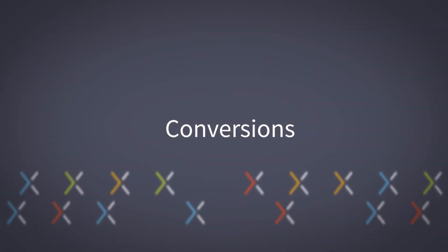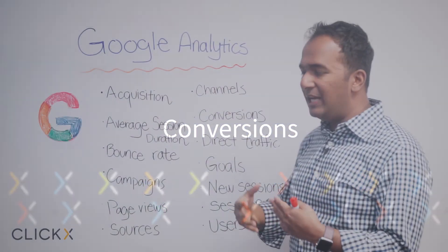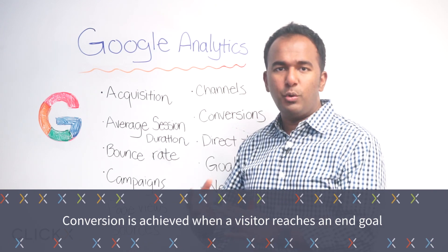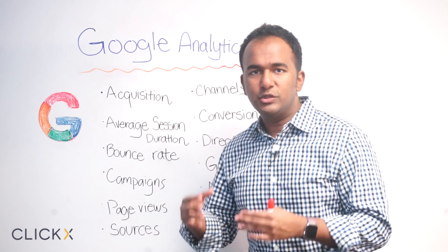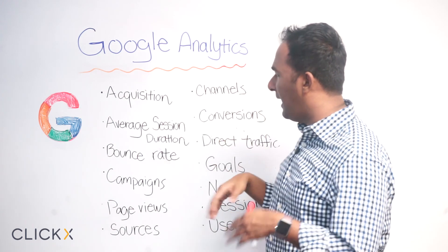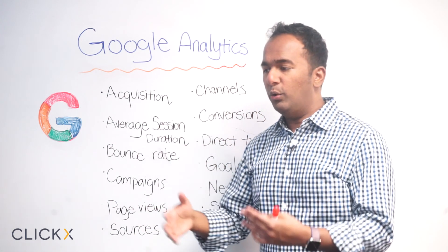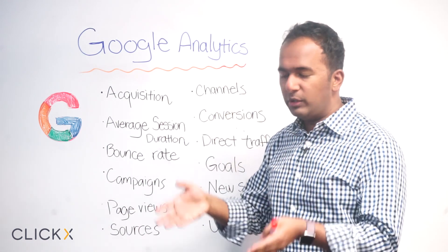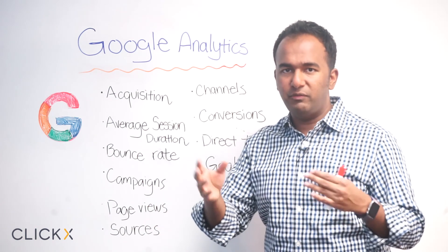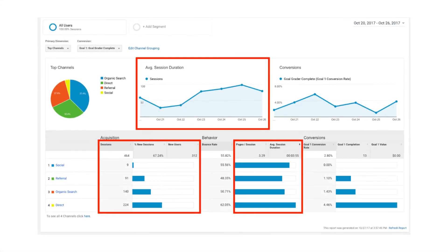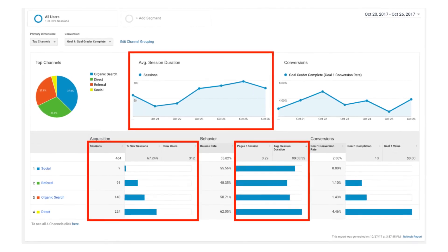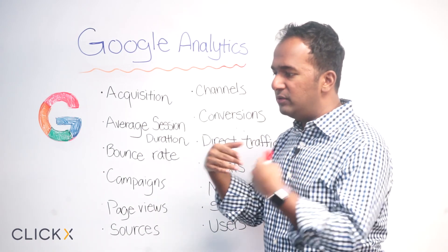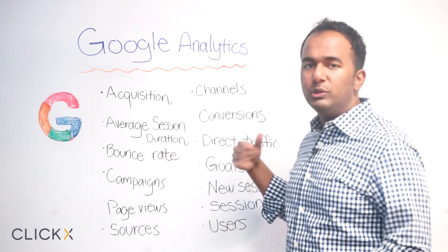A conversion is basically achieved when your visitor reaches an end goal. You set up a conversion to track everyone signing up for your email newsletter, downloading an e-book, making a purchase, or filling out a request-a-quote form. Those are all conversions you can track. So basically, you've got traffic and you want them to actually convert and do something — tracking that is what's considered a conversion.